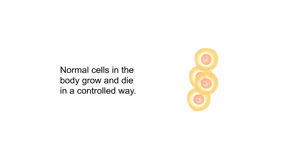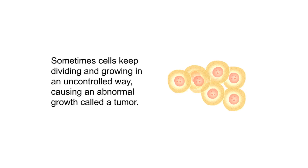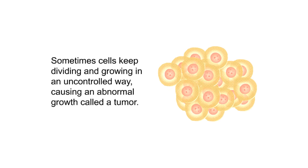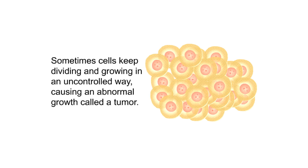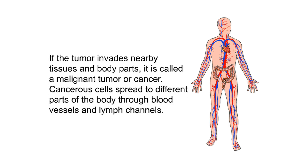The body is made up of very small cells. Normal cells in the body grow and die in a controlled way. Sometimes cells keep dividing and growing in an uncontrolled way, causing an abnormal growth called a tumor. If the tumor does not invade nearby tissues and body parts, it is called a benign tumor, or non-cancerous growth. Benign tumors are usually not life-threatening.